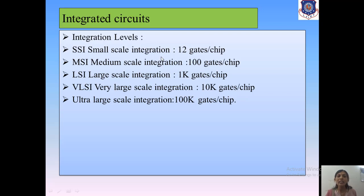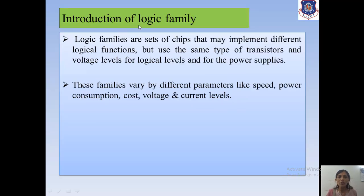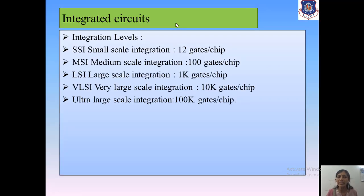These types are based on the number of components fabricated on a single chip. In SSI, more than ten gates can be fabricated on a single chip. In MSI, hundreds of gates can be fabricated. In LSI, thousands of gates can be fabricated. In VLSI, ten thousand gates can be fabricated, and in ULSI, one hundred thousand gates can be fabricated on a single chip.